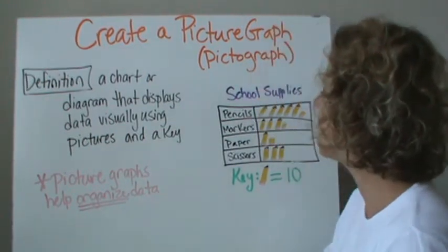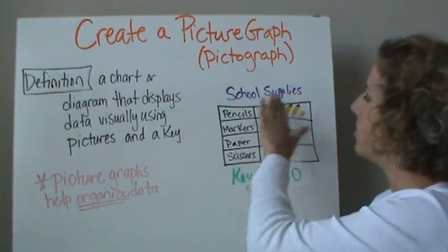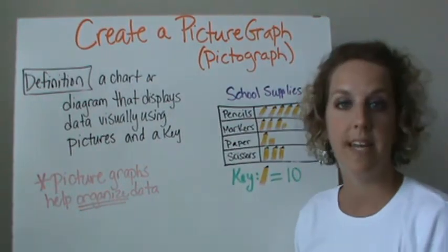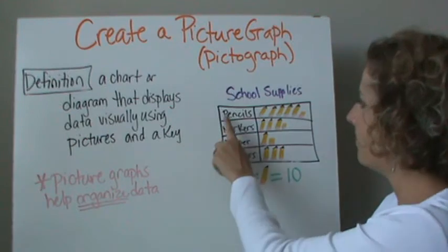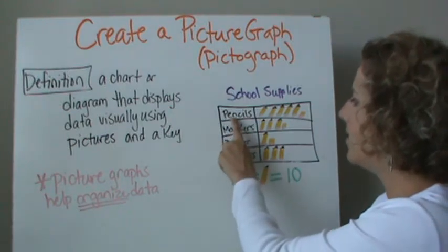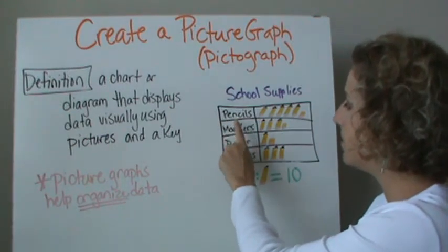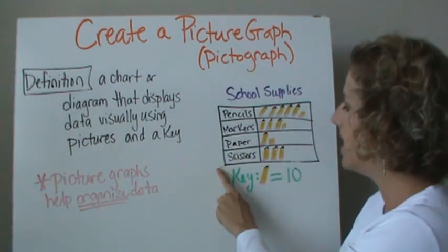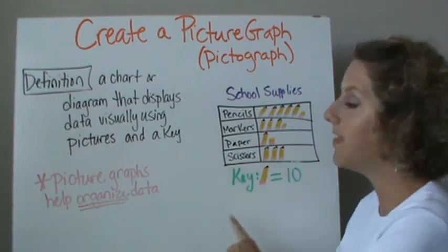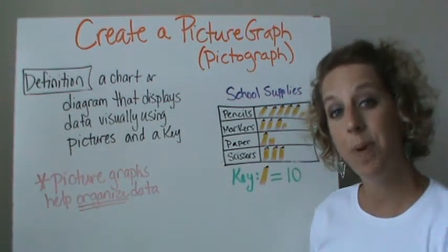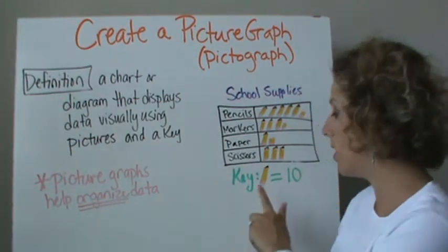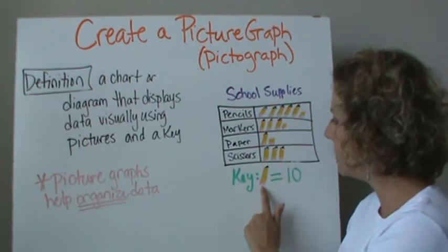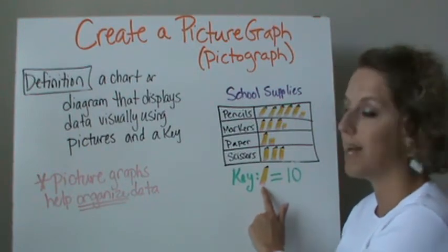Let's look at an example. This picture graph is about the school supplies that I counted in our classroom. I counted pencils, markers, paper, and scissors. Now if I look at the key, I see that each pencil is worth ten, so for each picture that I see I'm going to count by tens.